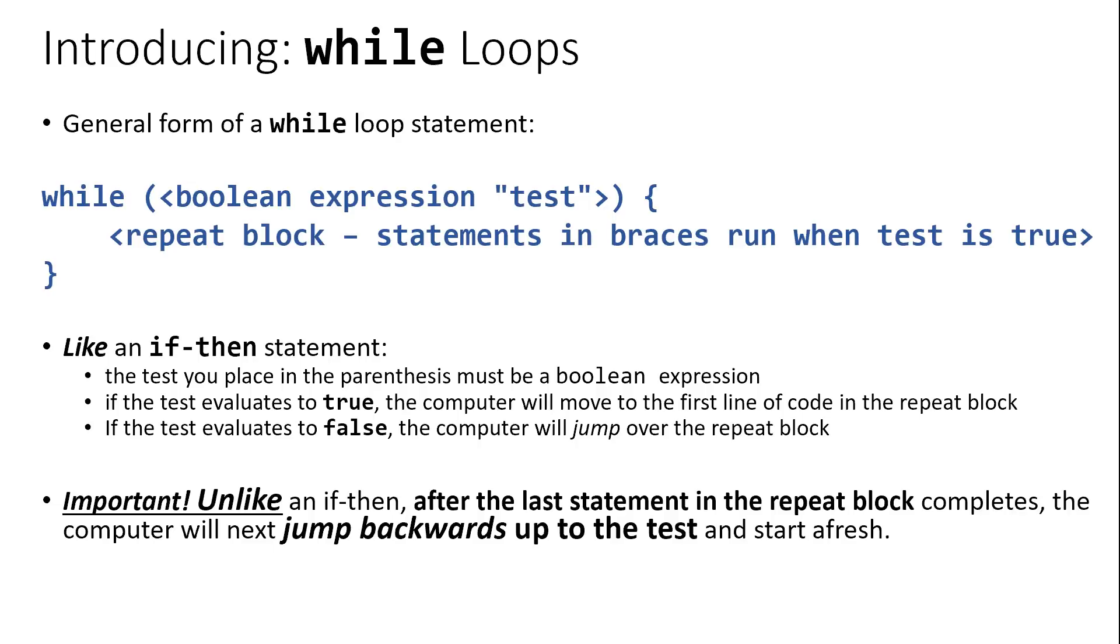What differentiates a while loop from an if-then statement is that when we reach the closing curly brace of a while loop, we are not going to continue on in our code like you would if you were working in an if-then statement. Instead, what's going to happen is we're going to go back up and test this condition one more time. So as soon as this closing curly brace is reached, we go back up to the test expression and ask, is this true?